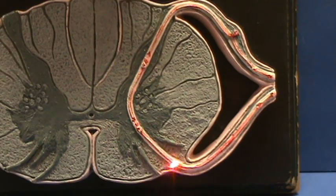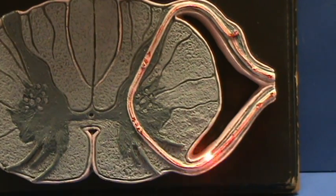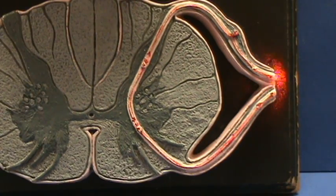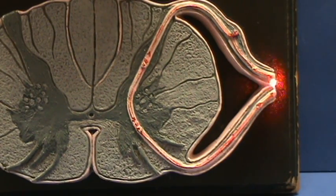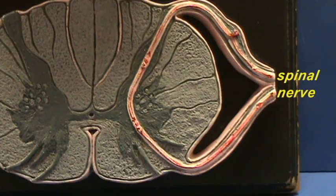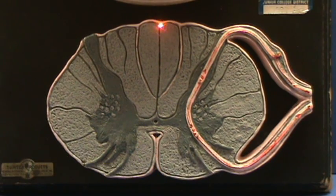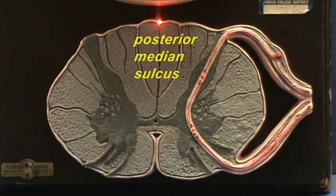All the motor neurons are going to exit from the anterior side of the spinal cord and contribute to the ventral or anterior root. The inflow and the outflow join and form the spinal nerve. This is the anterior median fissure, and this is referred to as the posterior median sulcus.